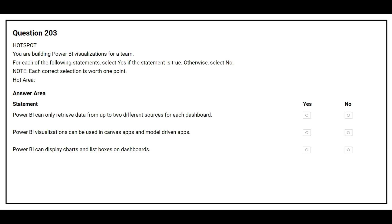Question number 203: You are building Power BI visualizations for a team. For each of the following statements, select Yes if the statement is true, otherwise select No. The first statement is: Power BI can only retrieve data from up to two different sources for each dashboard. The correct answer is No. The second statement is: Power BI visualizations can be used in canvas apps and model-driven apps. The correct answer is Yes. The third statement is: Power BI can display charts, graphs, and list boxes on dashboards. The correct answer is Yes.